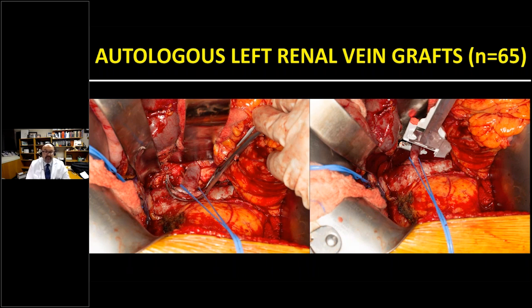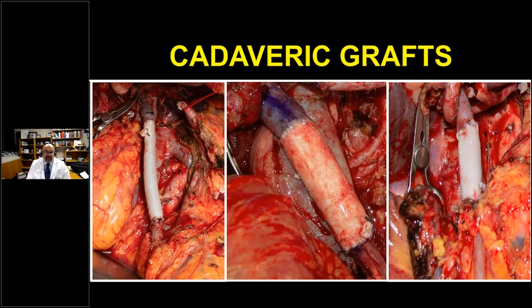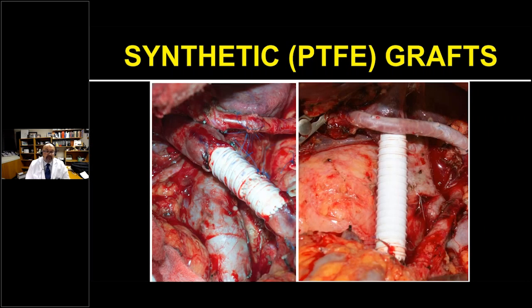Cryopreserved cadaveric grafts are an increasing option — you could use an SFA, iliac, or even aortic homograft. These are quite expensive and relatively new, so there's not much long-term data. Synthetic PTFE grafts are sometimes used when no adequate conduit is available, but they are associated with higher thrombosis rates and infection risk, and are typically used as a last resort.